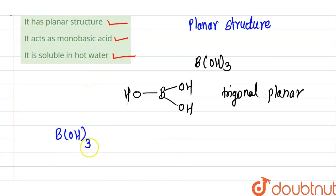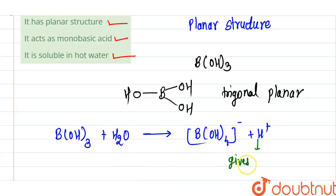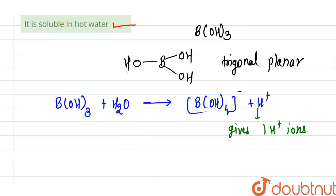It acts as a mono basic acid. When B(OH)₃ reacts with water, it forms B(OH)₄⁻ and H⁺. So boric acid gives one H⁺ ion, and therefore it acts as a mono basic acid.